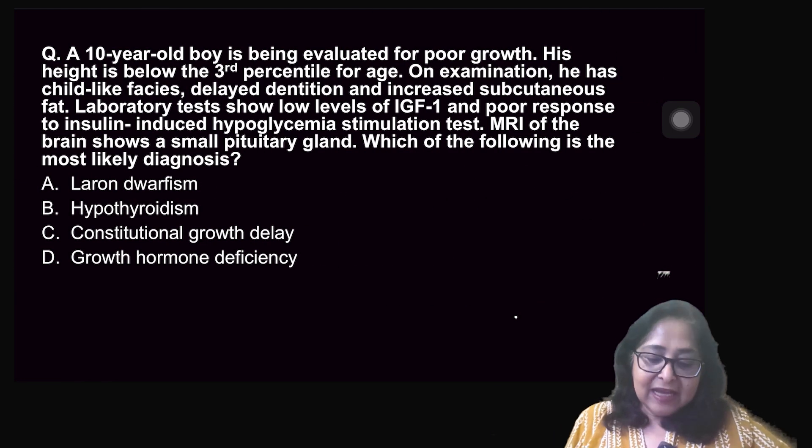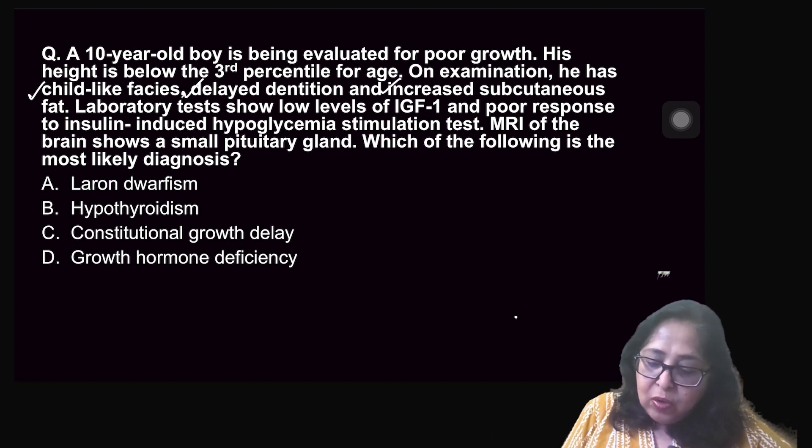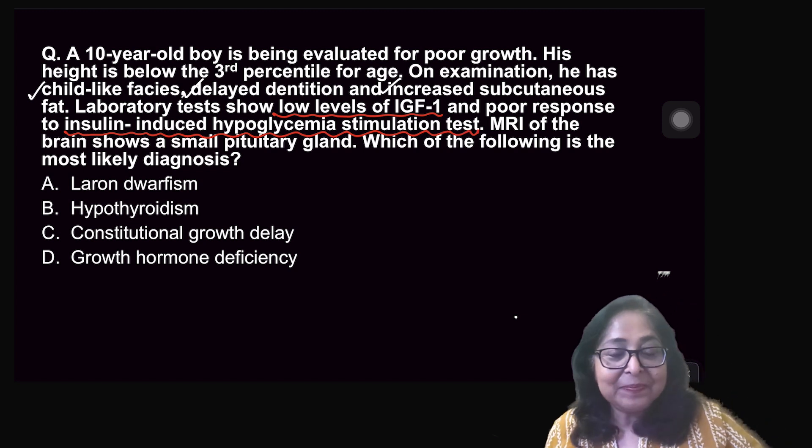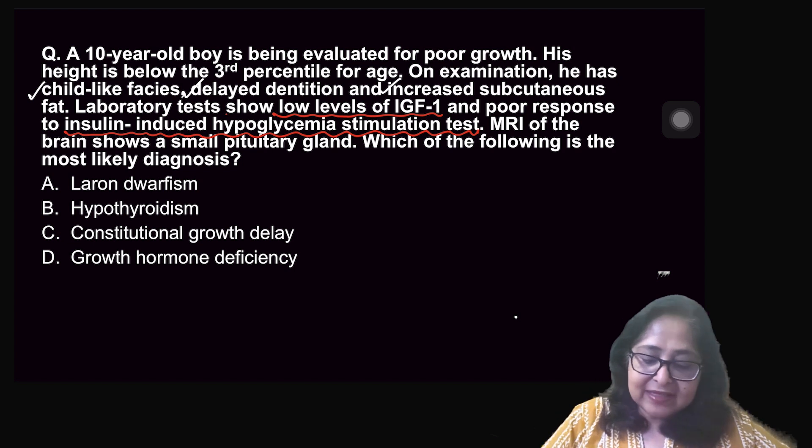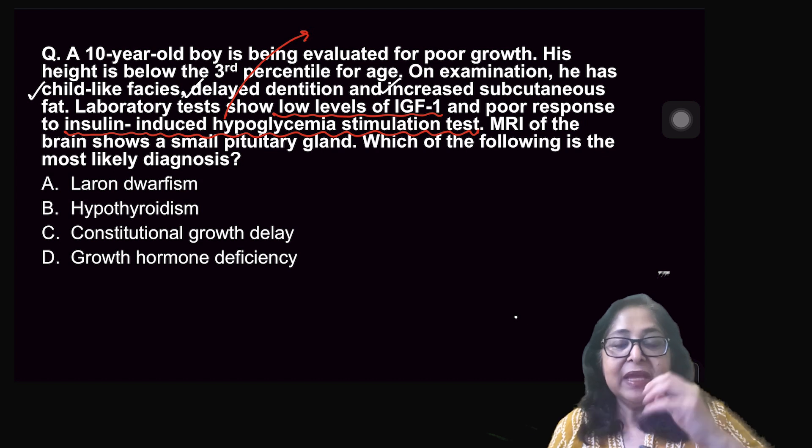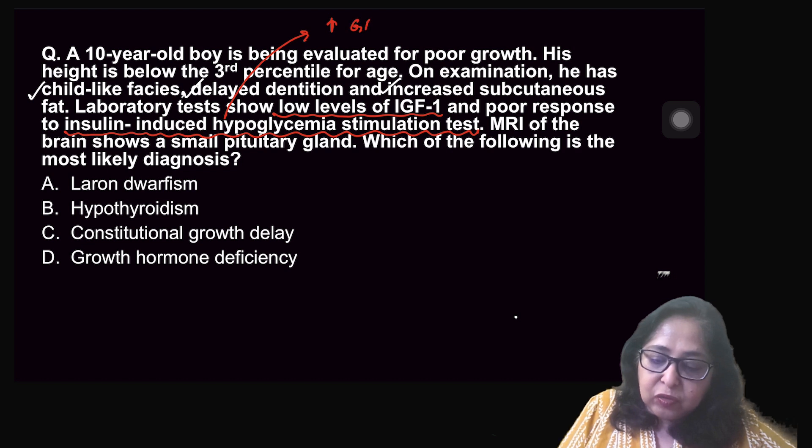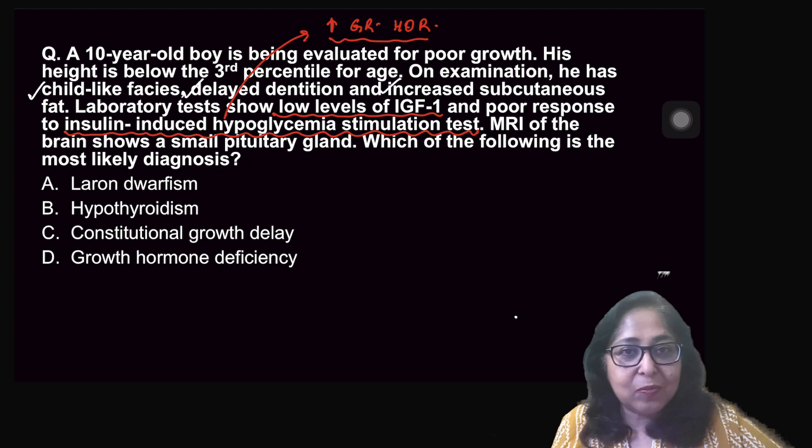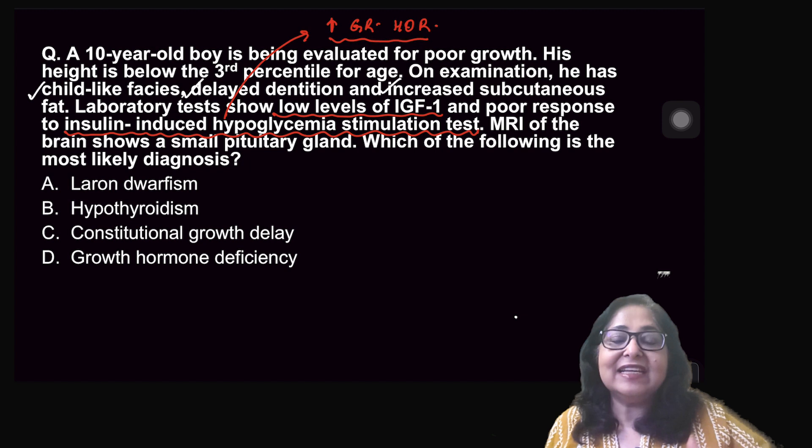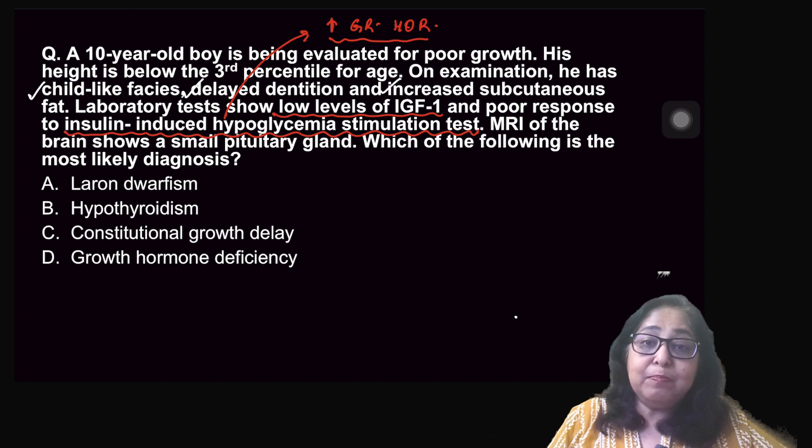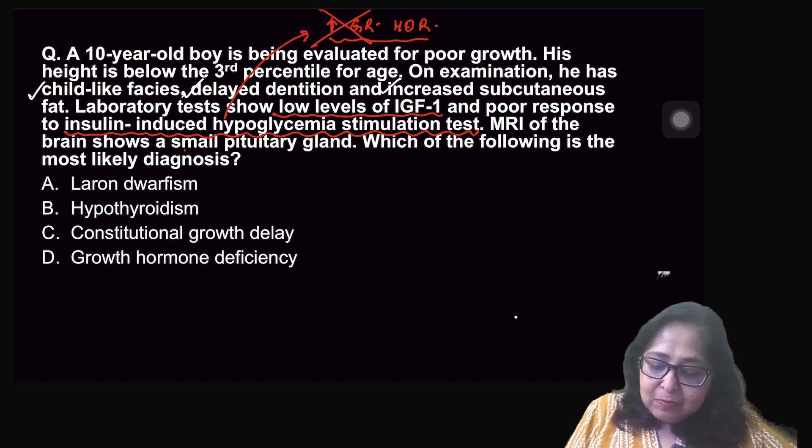Let's have a look at the first question. A 10-year-old boy is being evaluated for poor growth. His height is below the third percentile for age - short stature. He has child-like faces, delayed dentition and increased subcutaneous fat. There are low levels of IGF-1 and poor response to insulin-induced hypoglycemia stimulation test. What happens in an insulin-induced hypoglycemia test? The moment you inject insulin, there is hypoglycemia, which in turn causes an increase in growth hormone. Growth hormone is one of the very important stress hormones and will cause glycogenolysis and increase the blood glucose level. This case shows poor response to insulin-induced hypoglycemia.